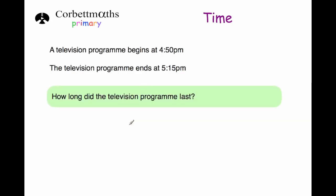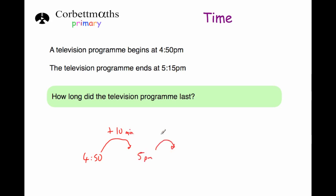Let's have a look at some questions involving time. A television program begins at 4:50 and ends at 5:15. How long did the television program last? So 10 minutes would bring us to 5 p.m., and then 15 minutes would bring us to 5:15 p.m. So altogether that's 10 plus 15, that's 25 minutes. The program lasted 25 minutes.